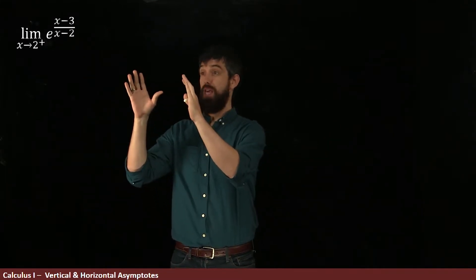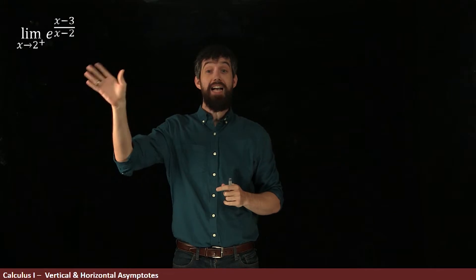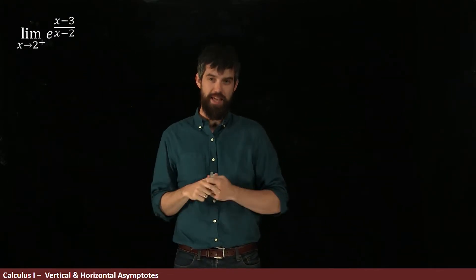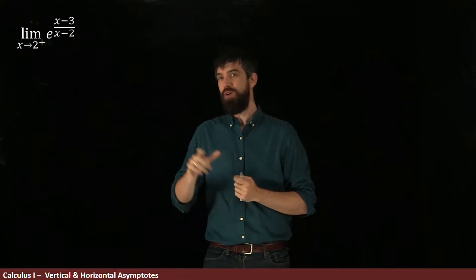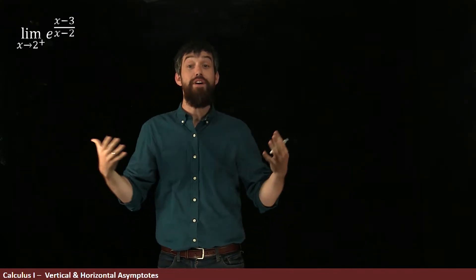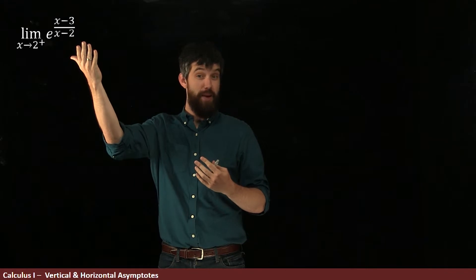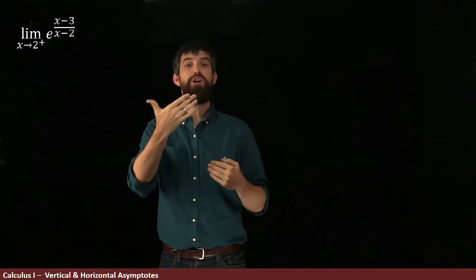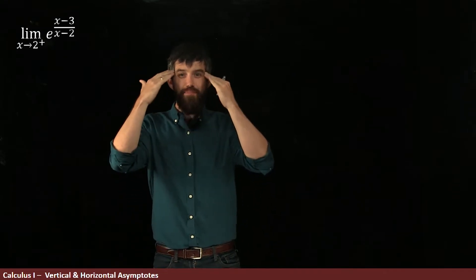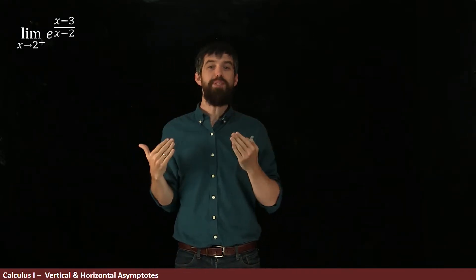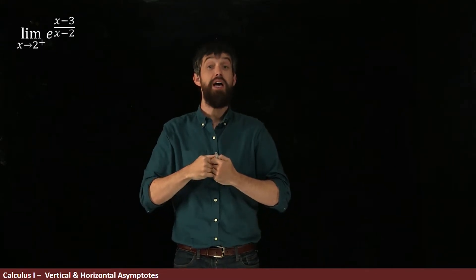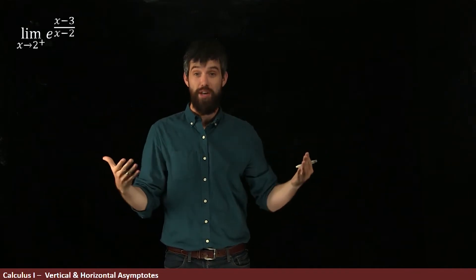I've started with a particular limit: the limit as x goes to 2 from the right. Why did I choose to investigate that limit? Well, if I look at the rational function, x minus 3 divided by x minus 2, I see that there is a division by 0 occurring at x equal to 2. That makes me think that x equal to 2 is a problem for this function, something I want to investigate. So I'm going to do this limit first, and we're going to investigate a couple other limits.